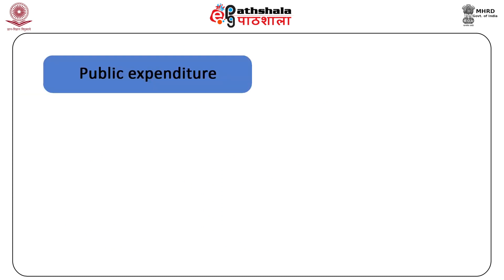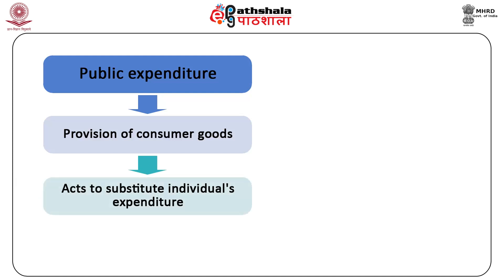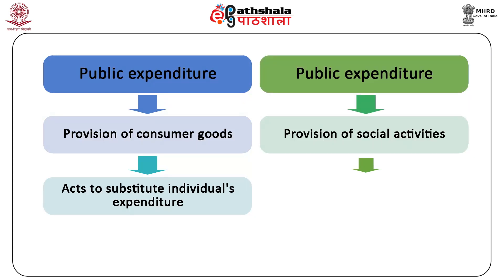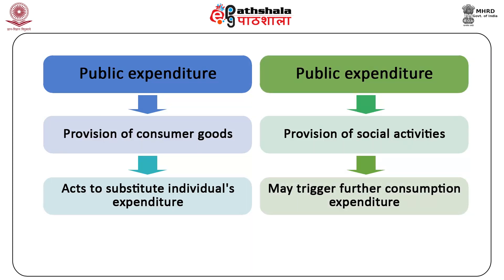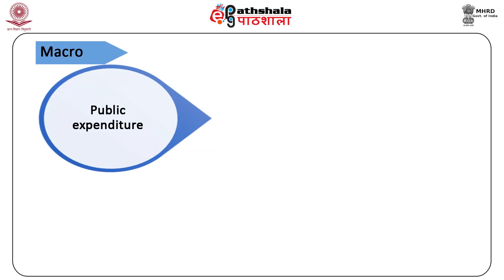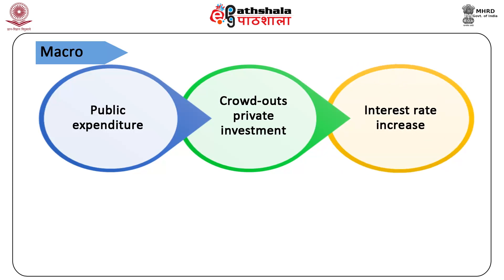At the microeconomic level, public expenditure when directed to the provision of consumer goods acts to substitute individual's expenditure, as with the case of free medicines. But when directed to provision of social activities like education, public expenditure may trigger a further consumption expenditure like the purchase of books and uniforms. At the macro level, public expenditure is considered to crowd out private investment, possibly through an interest rate increase.